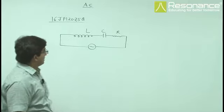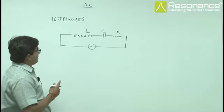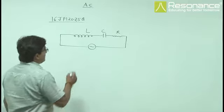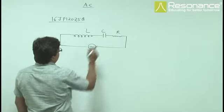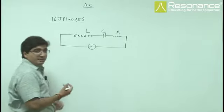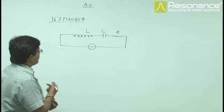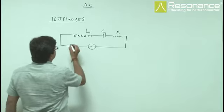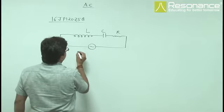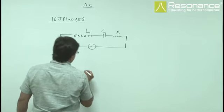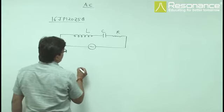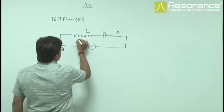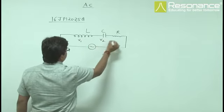This is a question on AC supply, LCR circuit — LCR in series. For LCR in series, we consider the potential drop: total potential drop. Let us suppose this is V1, this is V2, this is V3.